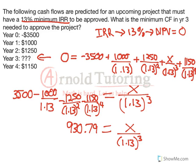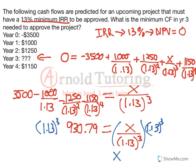I'm rounding on paper here but keeping the full answer in my calculator. So that means our discounted cash flow from year 3 has to equal 930.79 in order for this to work out with an NPV of 0 when we're using 13% as the discount rate. Our final algebra step here is just to multiply both sides by 1.13 to the power of 3, and we get x equals $1,343.04.